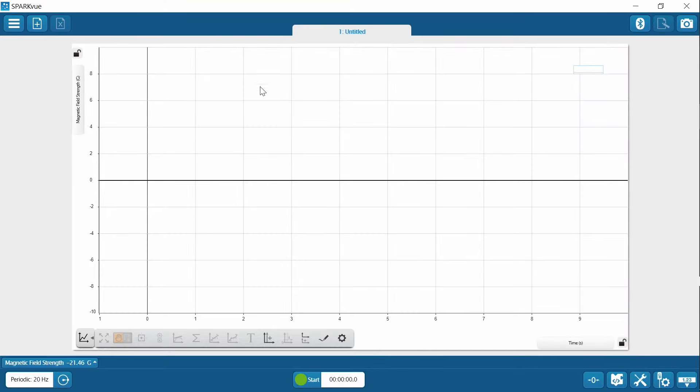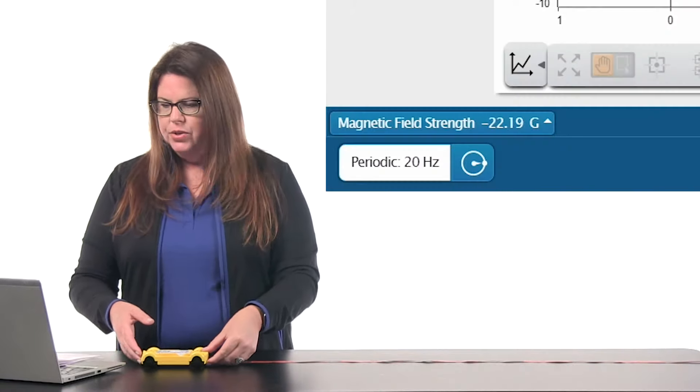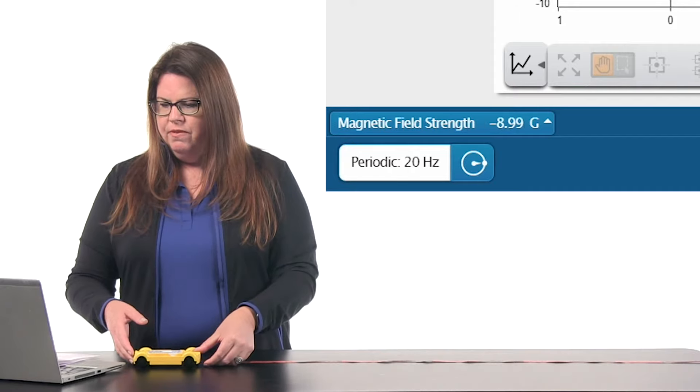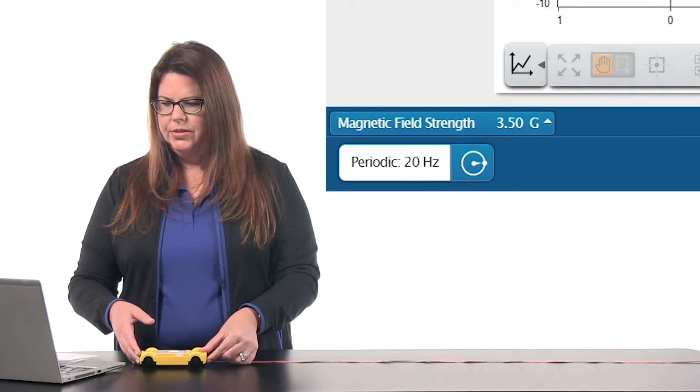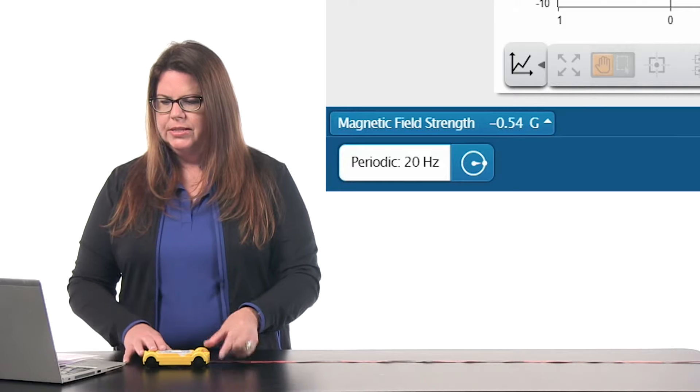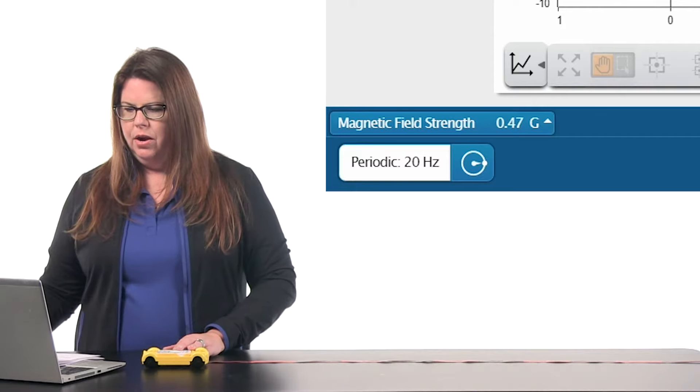So you see we have a graph of magnetic field strength over time. If you look at the bottom left hand of the SparkView screen, that's a live data bar. We're going to be measuring magnetic field strength in Gauss. For this activity, it's going to be really important whenever you start your vehicle calculations to get it as close to zero Gauss as you can. So see how I move the vehicle slightly, I'm getting closer to zero Gauss. It doesn't have to be perfect, just close.